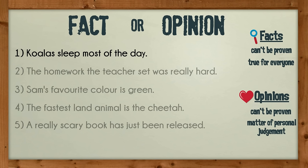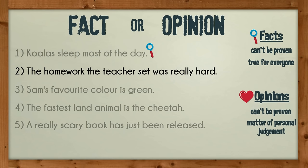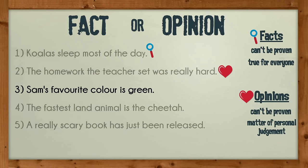The first one is a fact — it could be proven by observing them or by talking to an expert. The second is an opinion — what is hard for one student mightn't be hard for another. The third is a fact. It's not a fact that green is the best colour, but it is a fact that it's Sam's favourite colour. It could be proven by asking Sam: what's your favourite colour?